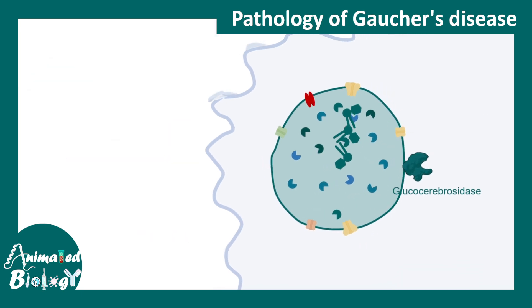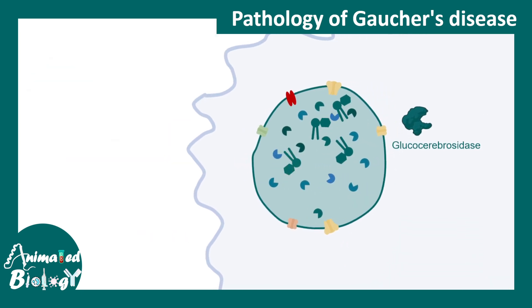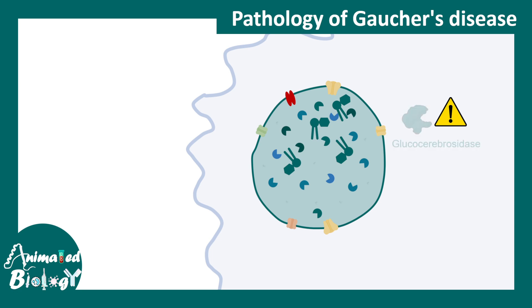But in the case of Gaucher disease, the glucocerebrosidase is faulty. That means the breakdown doesn't happen, and thereby there is a buildup of glucocerebroside inside the lysosome.